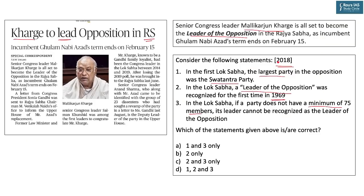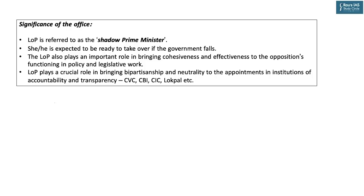Returning to the 2018 UPSC question: the third statement said a party needs a minimum of 75 members — this is false (the correct conventional number is 55 for Lok Sabha). The largest opposition party in the first Lok Sabha was not Swatantra Party but CPI with 16 seats. Before 1967-69, no party could earn the position of Leader of Opposition because the 10 percent threshold enforced by the first Speaker was too high for parties of that era.